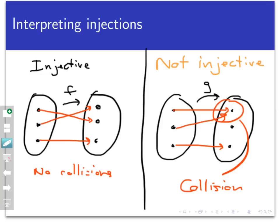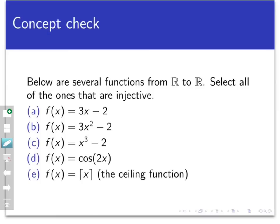So let's end off with a concept check here. Here are five functions from the real numbers to the real numbers. The fifth one down here is the ceiling function you saw a little earlier and it rounds input up to the next highest integer. Select all the ones of these that are injections. So pause the video, make your selections, and come back when you are ready to check.